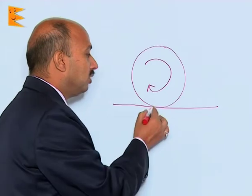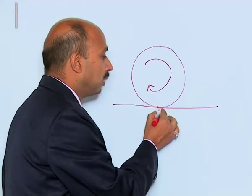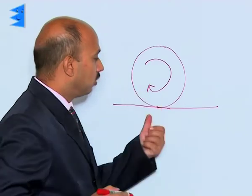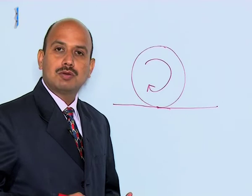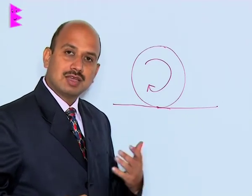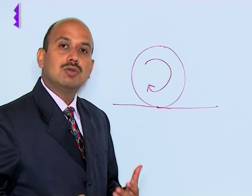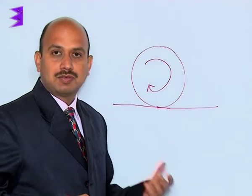But see here when the body starts doing pure rolling, then frictional force becomes zero, because the velocity of the point of contact, that is the relative velocity of the point of contact, becomes zero. And in this case there is no work done against friction.